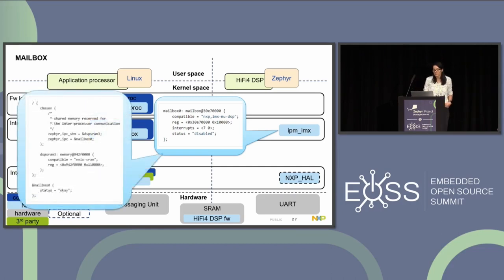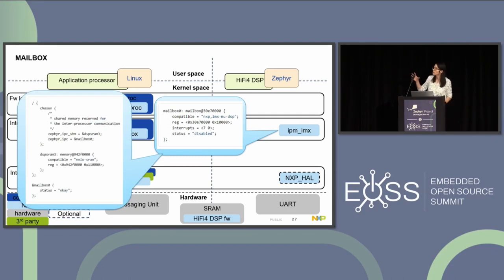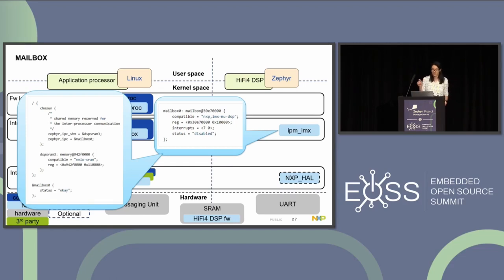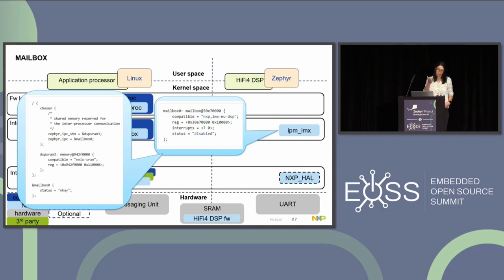The mailbox node from the Zephyr side is used in our DTS overlay for inter-process communication — we have the Zephyr IPC which uses the mailbox node, and we enable the mailbox and set the status to OK.